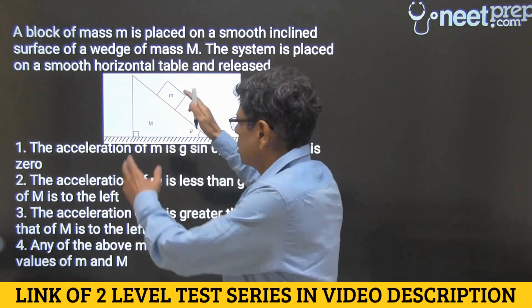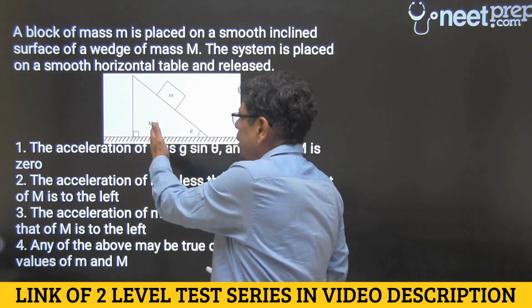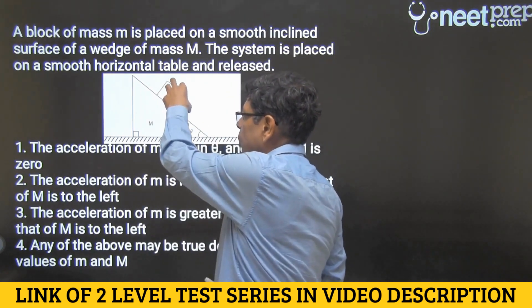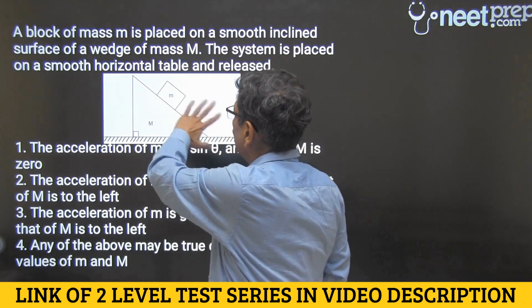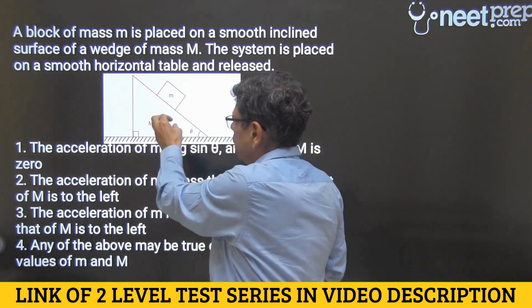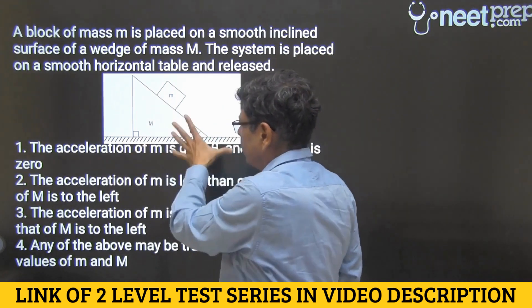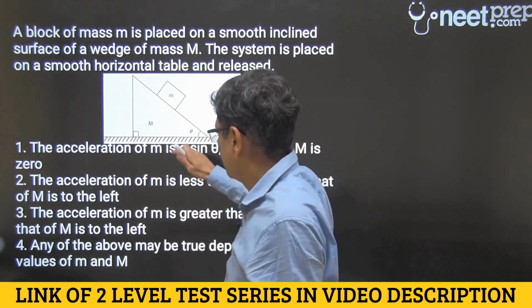In this question we have got this wedge of mass capital M on top of which we place a block of mass small m. There is no friction anywhere and the whole system is released on a horizontal frictionless table.